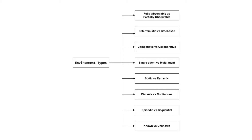Environments can be static, remaining unchanged as the agent operates, or dynamic, where the environment evolves over time. Finally, they can be discrete or continuous, depending on whether the agent deals with finite states or an infinite range of possibilities. The agent's design depends heavily on these environmental factors.